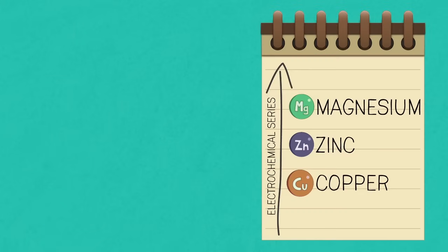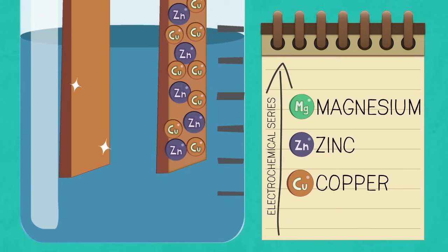Metals above copper in the electrochemical series like zinc will form ions at the anode and dissolve into solution. The copper sulfate solution has to be replaced if the concentration of zinc ions becomes too high.